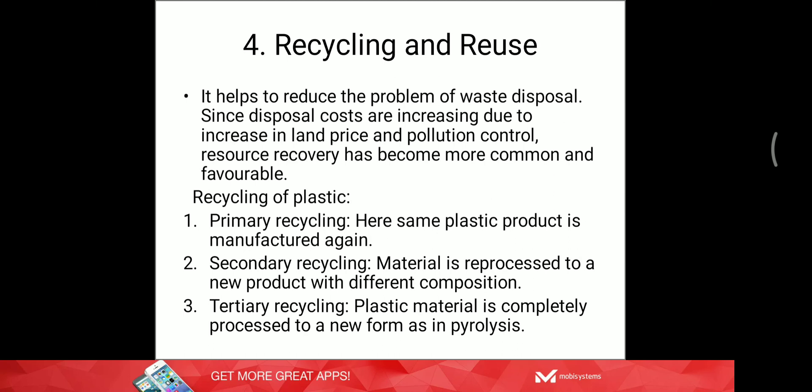The fourth and very important method is recycling and reuse, which should be part of our lives. Especially with plastic — we cannot eliminate plastic but we can reuse it or give it for recycling, helping reduce waste disposal problems. As disposal costs increase due to rising land prices and pollution control needs, resource recovery has become more favorable. Recycling of plastic can be done in three ways: primary recycling — the same plastic product is manufactured again; secondary recycling — material is reprocessed into a new product with different composition; and tertiary recycling — plastic is completely processed into a new form, as in pyrolysis.